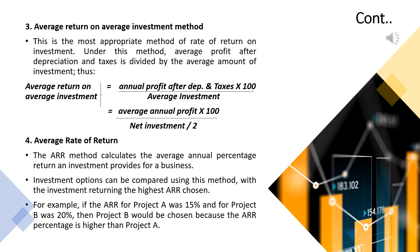The fourth method is the average rate of return. The ARR method calculates the average annual percentage return on investment for a business. Investment options can be compared using this method, with the investment returning the highest ARR chosen. For example, if the ARR of project A was 15% and project B was 70%, then project B would be chosen because ARR percentage is higher than project A.